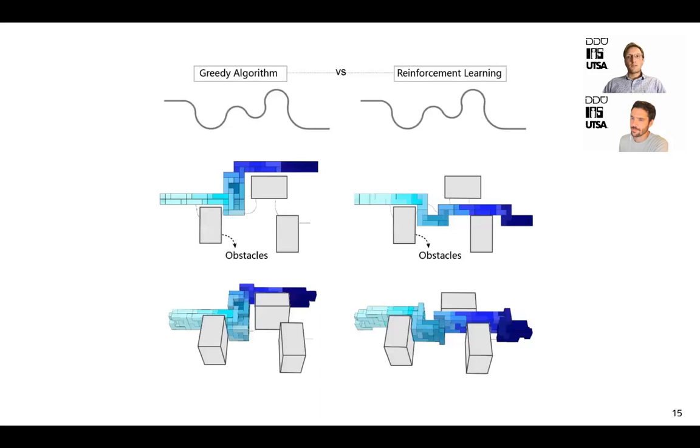The advantage of reinforcement learning is that the algorithm can reason over a sequence of actions. For example, in an environment with obstacles, the greedy algorithm would deviate from the desired curve, whereas reinforcement learning can plan ahead and avoid the obstacles.